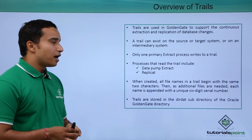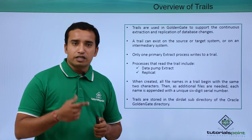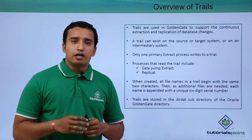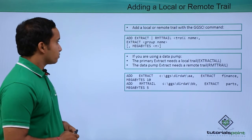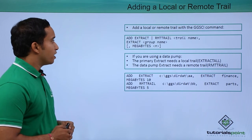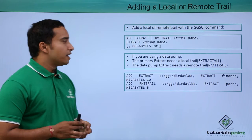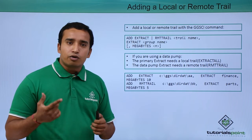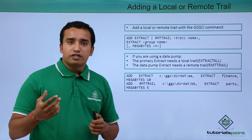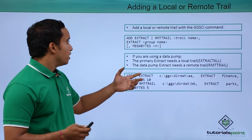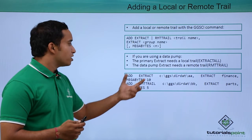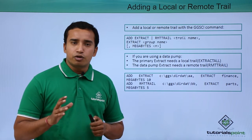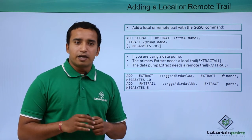These trail files are created in whatever location you have mentioned in the extract process, and they have a sequential numbering. When you are adding an extract, you are going to define an X trail, which is your trail file. You also mention the size of the trail file. By default, the size of each trail file is going to be 10 MB — that is 10 megabytes.